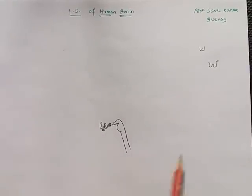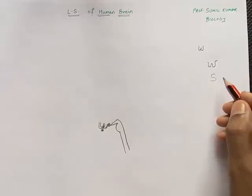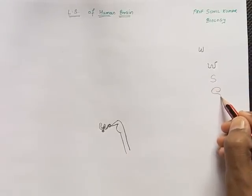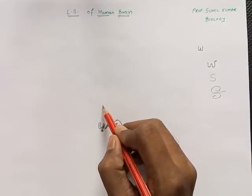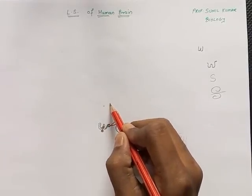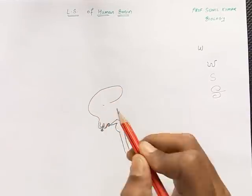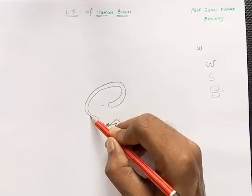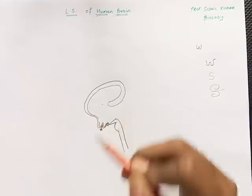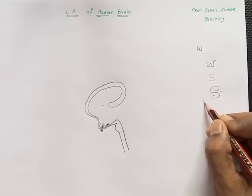We all know how to write S — we write it in this way. Let's make it a little bit more stylish, somewhat like this. Draw half S. When you draw half S, the structure becomes somewhat like this. Make it a little bit thick so that it will appear like the corpus callosum. Now we need to draw V.